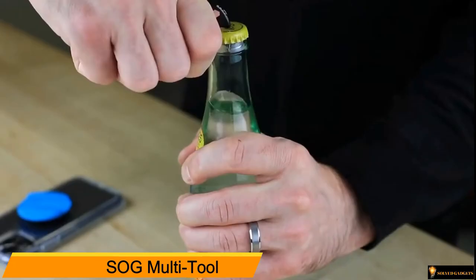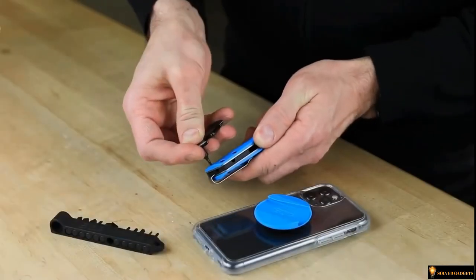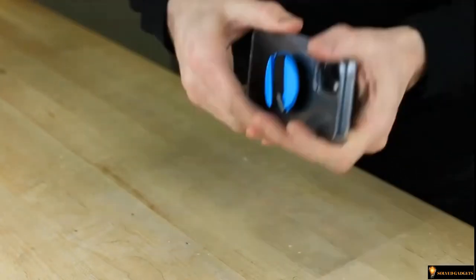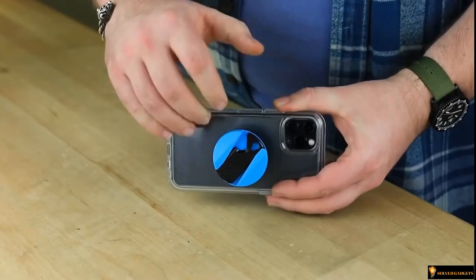PopGrip SOG Multi-Tool. This detachable multi-tool is safely tucked into a PopGrip so it's there when you need it. Multi-Tool includes a bottle opener, mini pry bar, and two hex-bit drivers. Easily remove the top to wirelessly charge your phone.